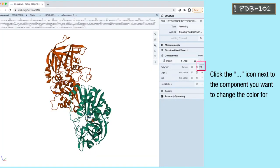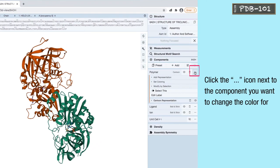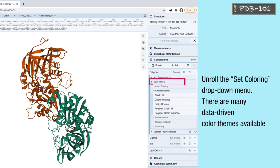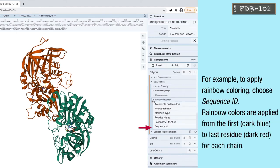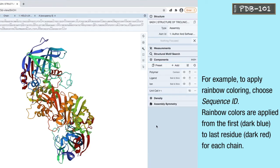Click the 3 dots icon next to the component you want to change the color for. Unroll the set coloring drop down menu. There are many data-driven color themes available. For example, to apply rainbow coloring, choose sequence ID. Rainbow colors are applied from the first, dark blue, to last residue, dark red, for each chain.